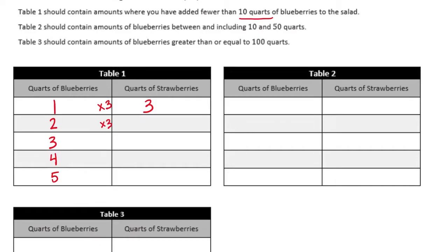For every 2 quarts of blueberries we would need 6 strawberries. For every 3 quarts we would need 9 strawberries. For every 4 quarts we would need 12 strawberries. And for every 5 quarts of blueberries we would need 15 strawberries.